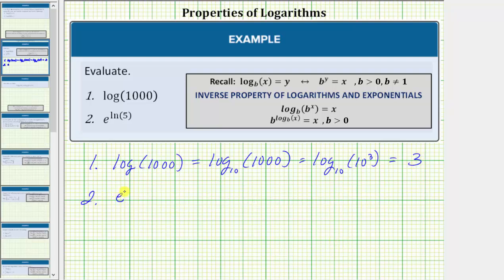Number two, we have e raised to the power of natural log 5. Natural log is log base e, and therefore e raised to the power of natural log 5 equals e raised to the power of log base e of 5. Notice how this fits the form of the second property.